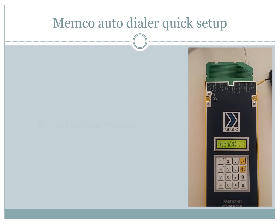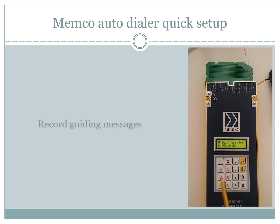Next, if guided voice was selected, we should scroll to messages and press H key. Here we will access the location tab. Press 2 to record, then H to unlock and start recording the location message. When finished, press H key, and we can now play back the recorded message.